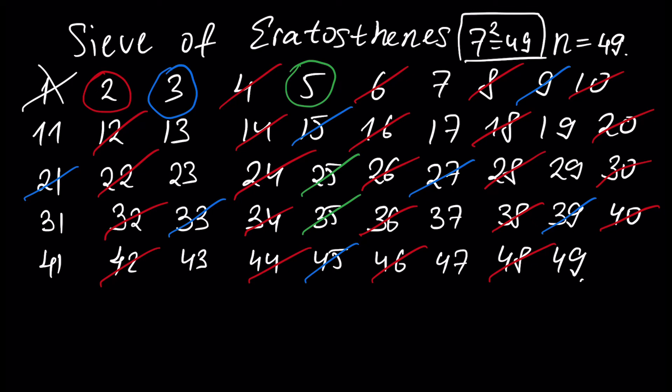The next and last number, seven, will be a prime number. By definition this number is divisible only by one and number itself, seven. This number is not divisible by any number prior to seven because we already crossed out all multiples of those numbers. Let's cross out all the multiples of seven: fourteen is crossed out, twenty-one is crossed out, twenty-eight is crossed out, thirty-five is crossed out, forty-two is crossed out, and the only number we have to cross out is forty-nine.